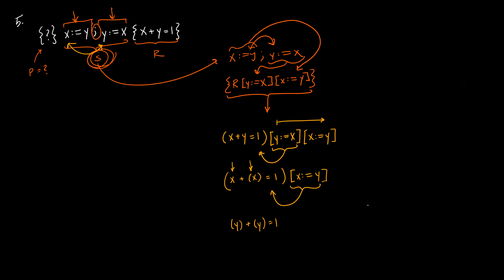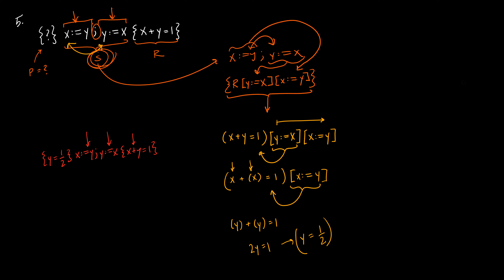After the first substitution we have x + x = 1. Now applying the second substitution x→y, we replace both x's with y to get y + y = 1, which simplifies to 2y = 1, or y = ½. This is the valid precondition. The complete Hoare triple is: {y = ½} x := y; y := x {x + y = 1}. Intuitively, x and y both become ½, and ½ + ½ = 1.